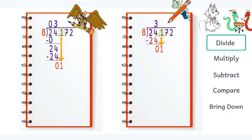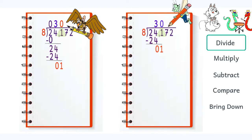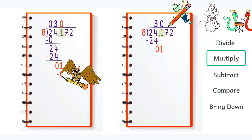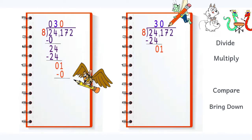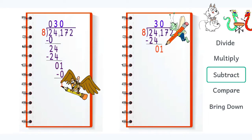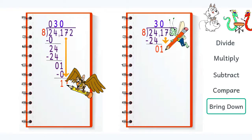Eight goes into one zero times. We need to put the zero right above the number we brought down. We could show that eight times zero is zero, and one minus zero is one. Then bring down the next number, seven.